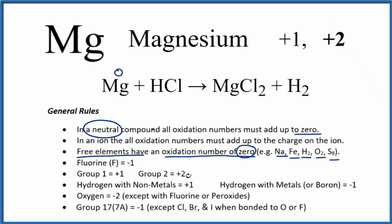We look at our list of rules here. Elements in group 2—magnesium is group 2 in the periodic table—oxidation number is plus 2. So the oxidation number of the magnesium has gone from zero as a free element. Now it's bonded to the chlorine, it's a plus 2.